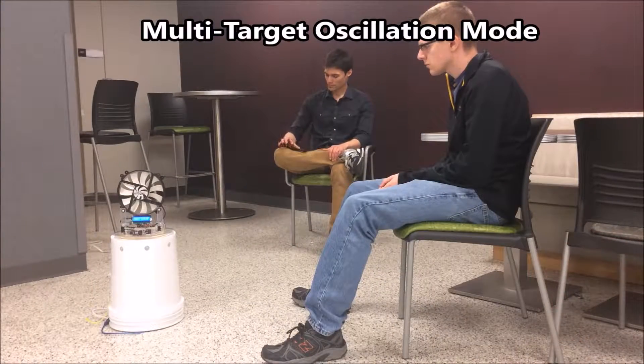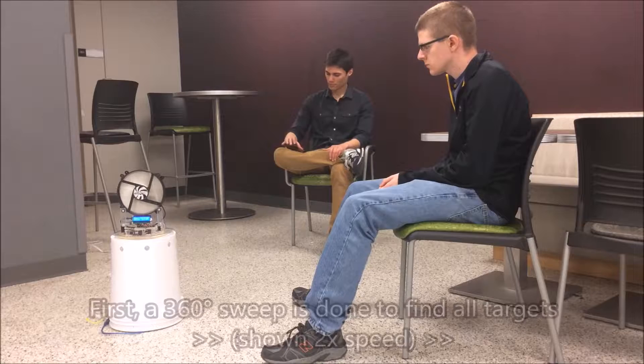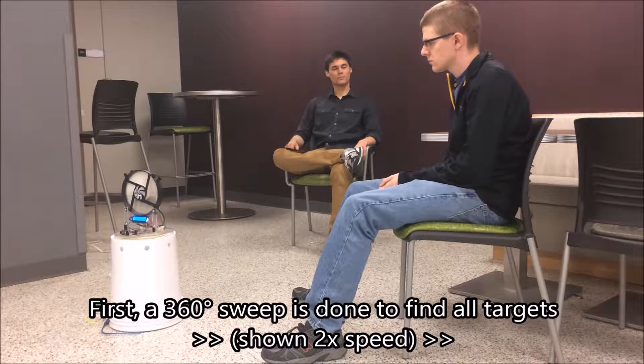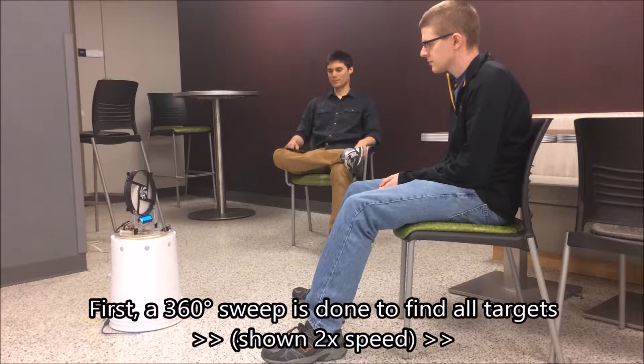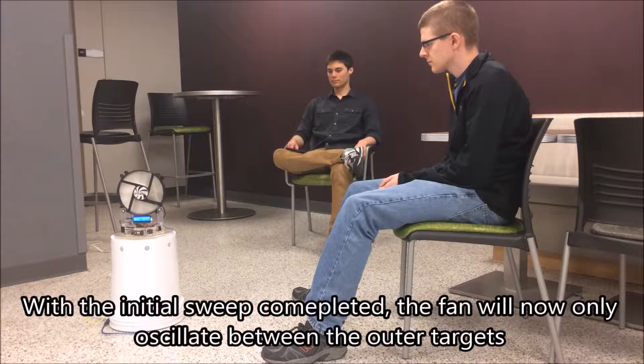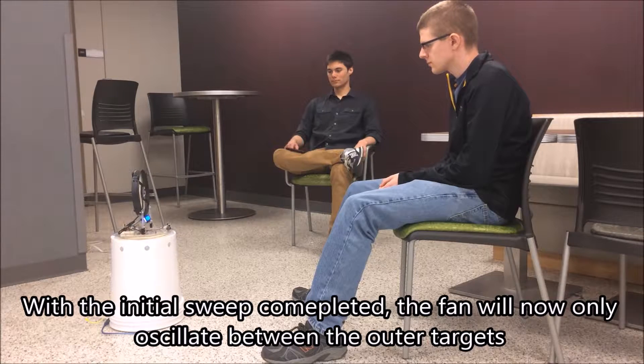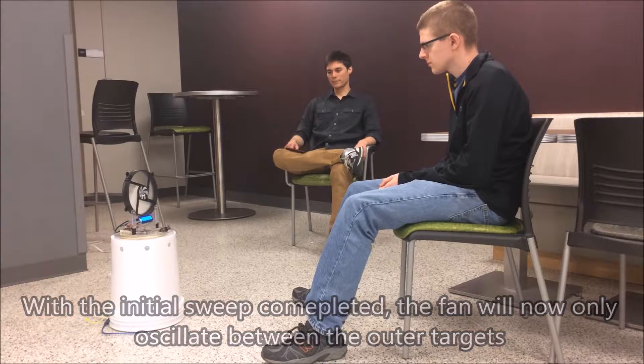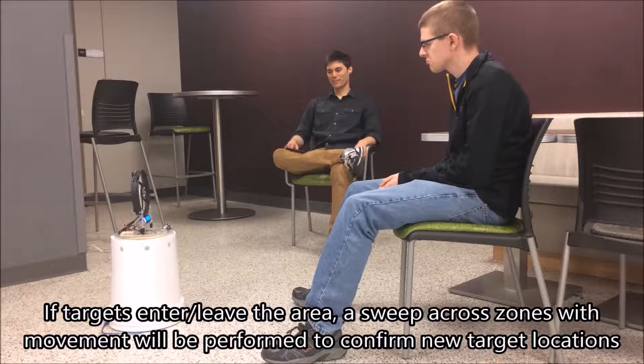Multi-target oscillation mode will ensure that the oscillation is only between targets in the room. Once started, the device will sweep in all directions to enumerate all targets. This can only be done with the Grid Eye and not the stationary sensors on the sides, which only detect motion instead of absolute temperature readings. After the initial scan, the device is now self-aware of all the targets in the room.